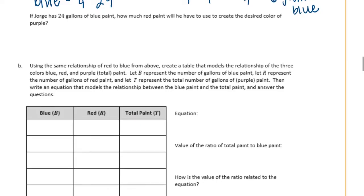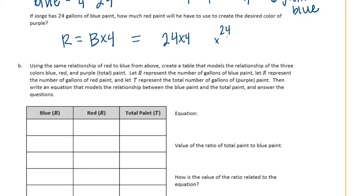If Jorge has 24 gallons of blue paint, how much red paint will he have? Red equals blue times 4, so blue times 4 would be 24 times 4. 4 times 4 is 16, 4 times 2 is 8 plus 1 is 9, 3 times 1 is 3 — so that would be 96 gallons of red paint.